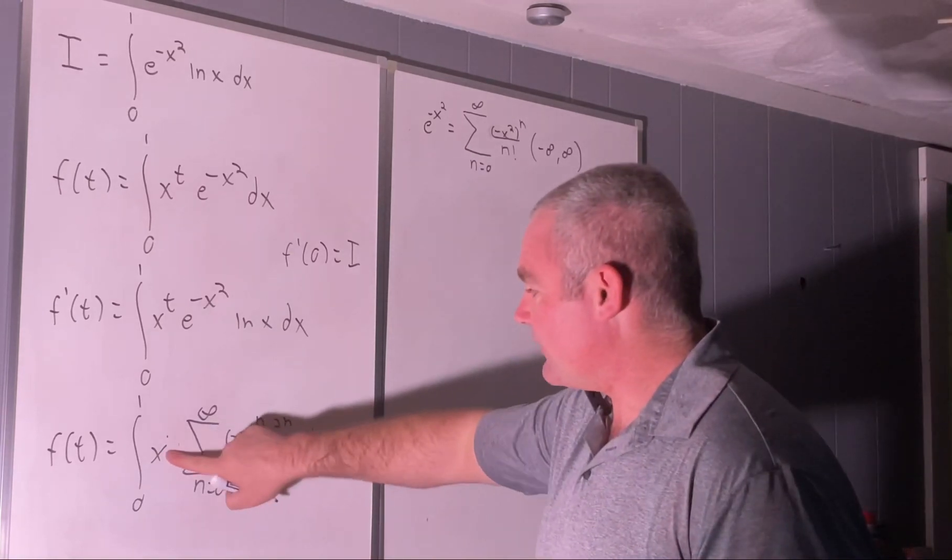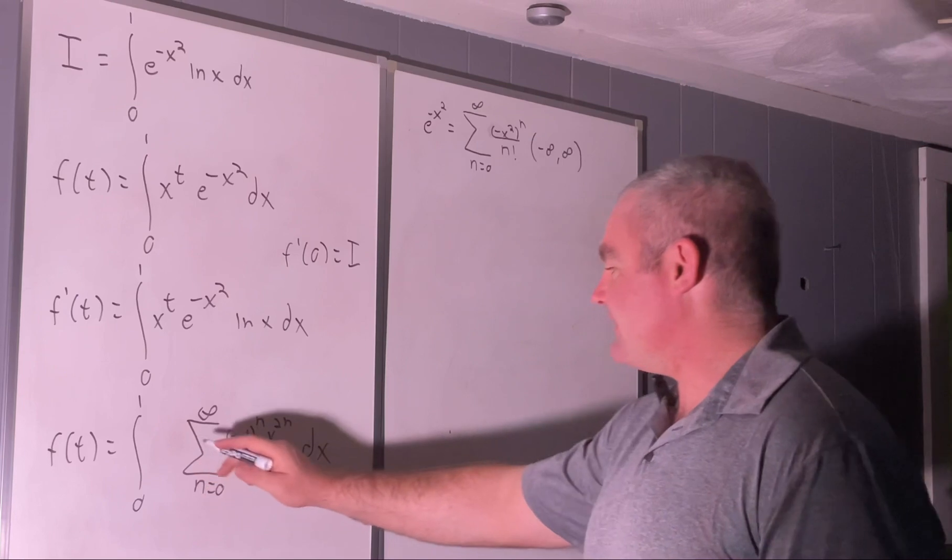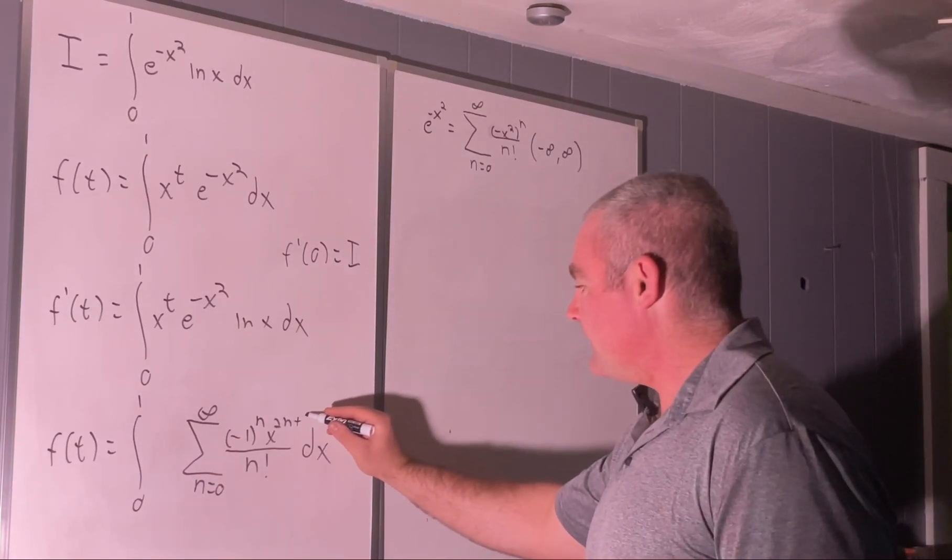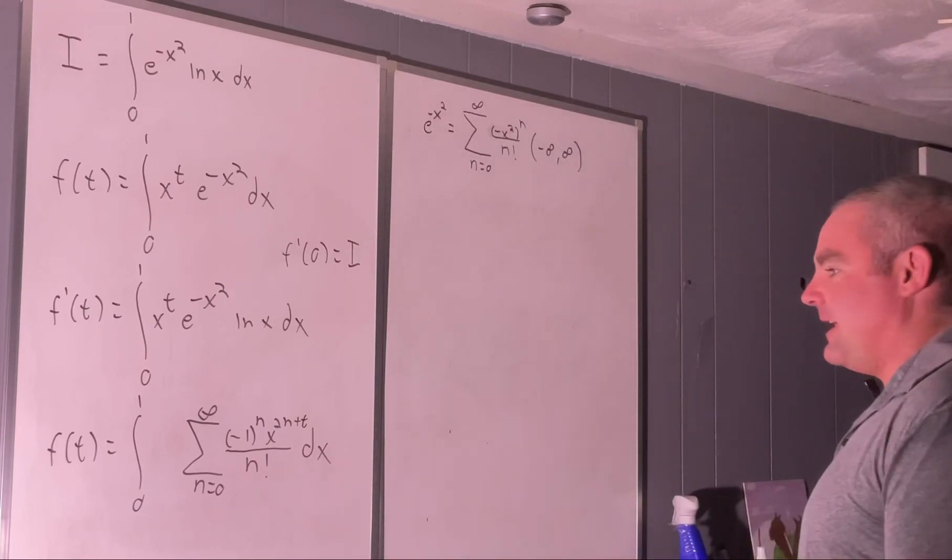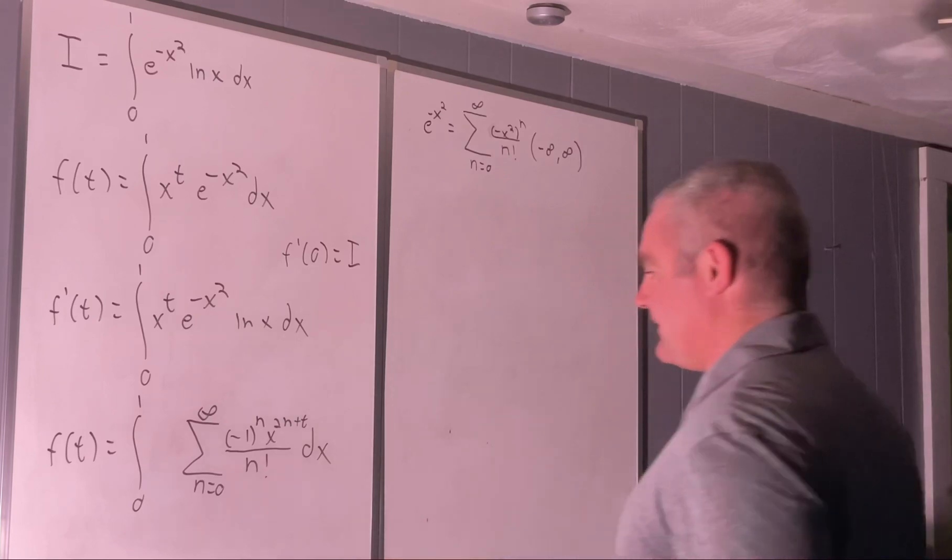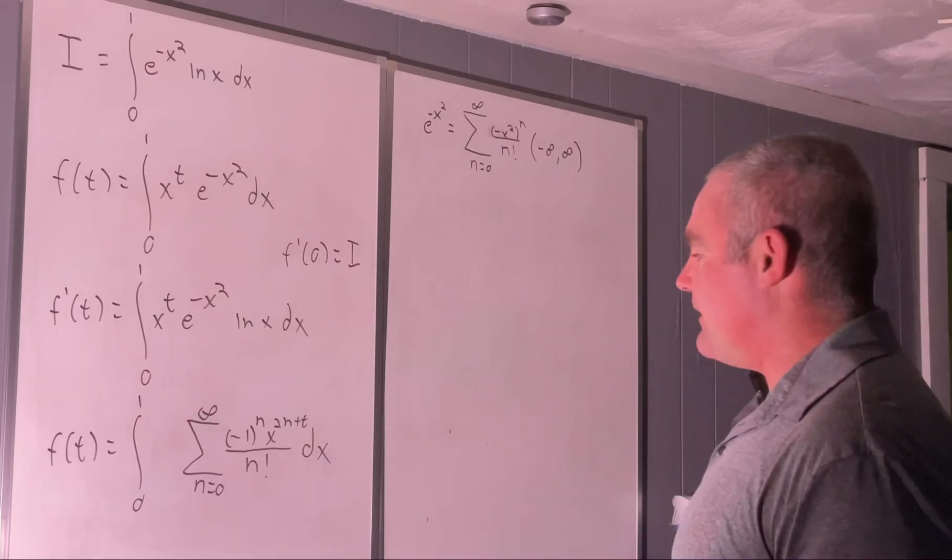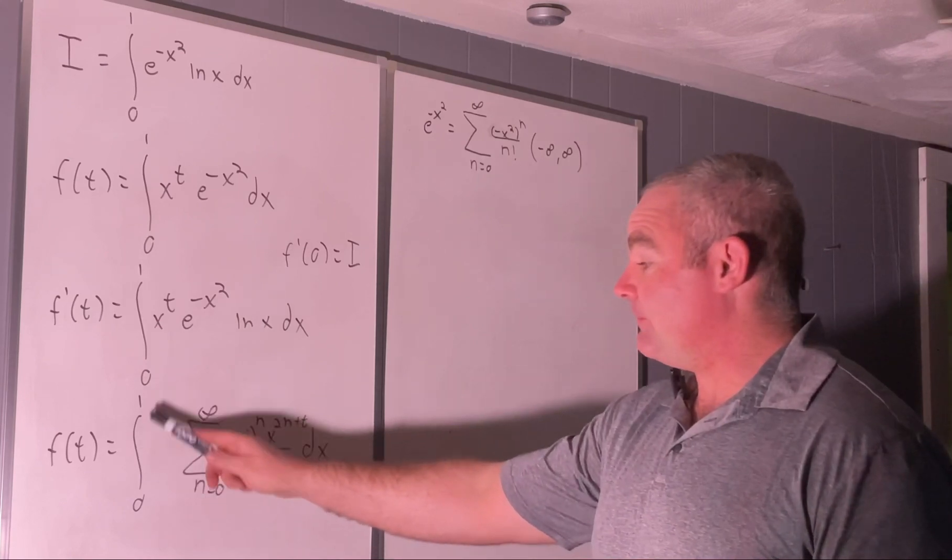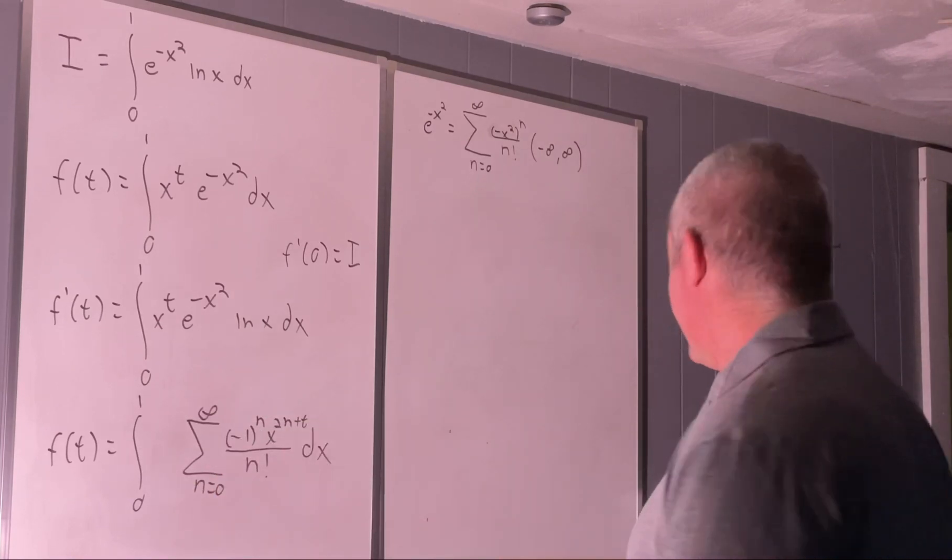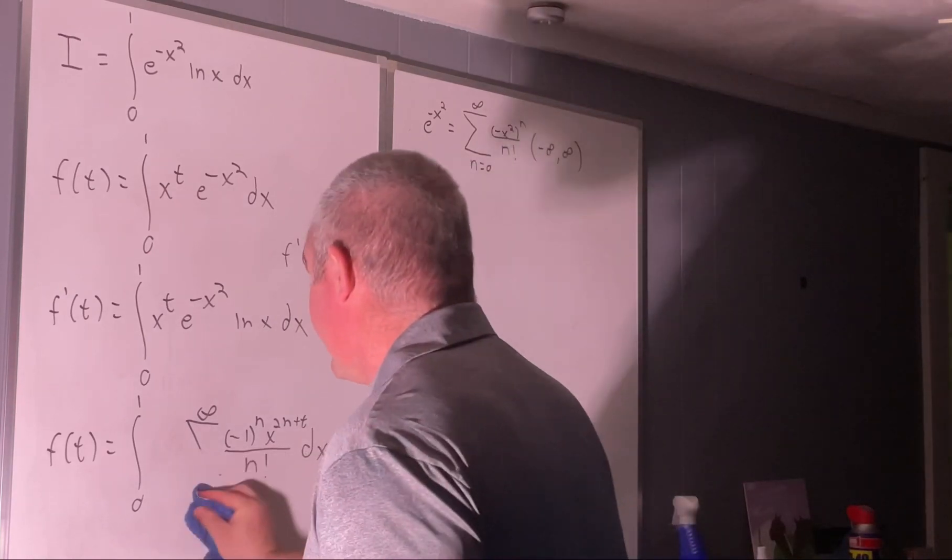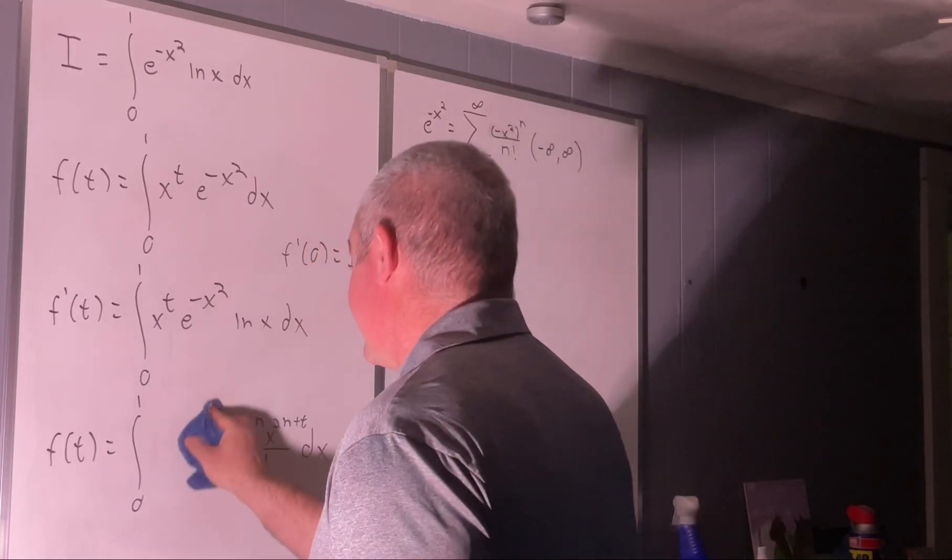Next what we'll do is we'll bring this x to the t inside our summation notation like this, because x to the t is independent of n, and that's what matters in the sum right there. So we can do that. We can also switch the integration and summation notations in this case using Fubini's theorem. You can't always do that, but in this case, you can.